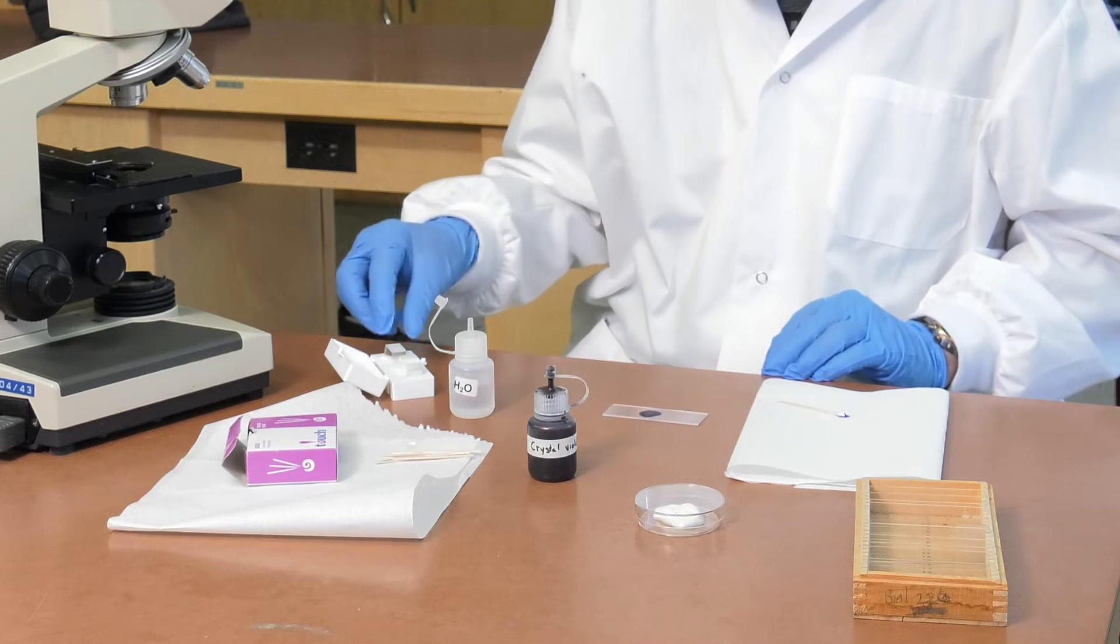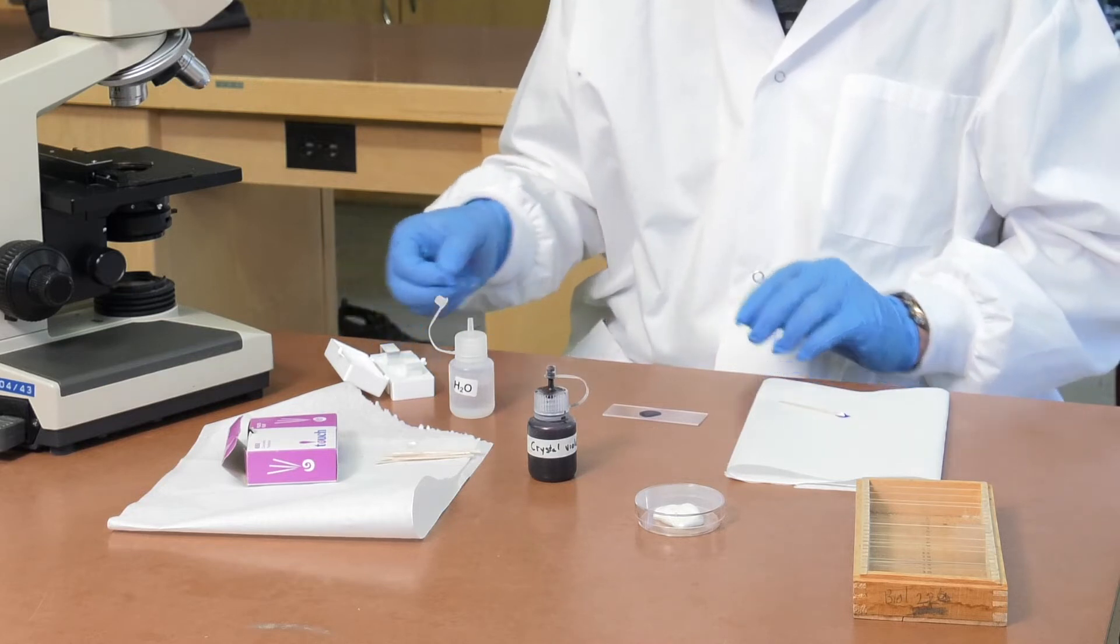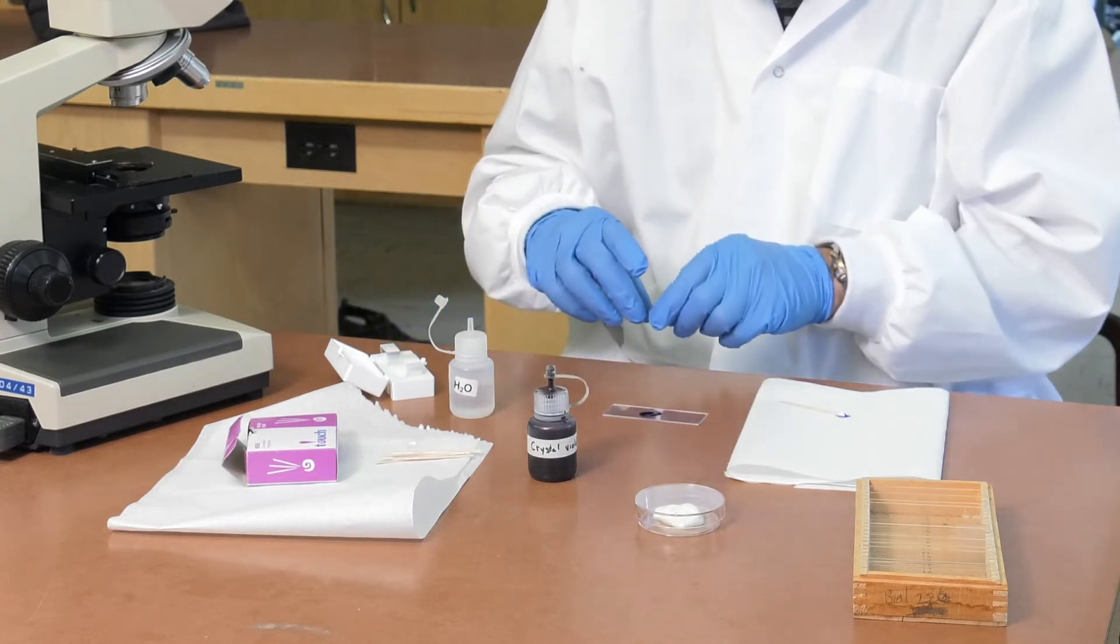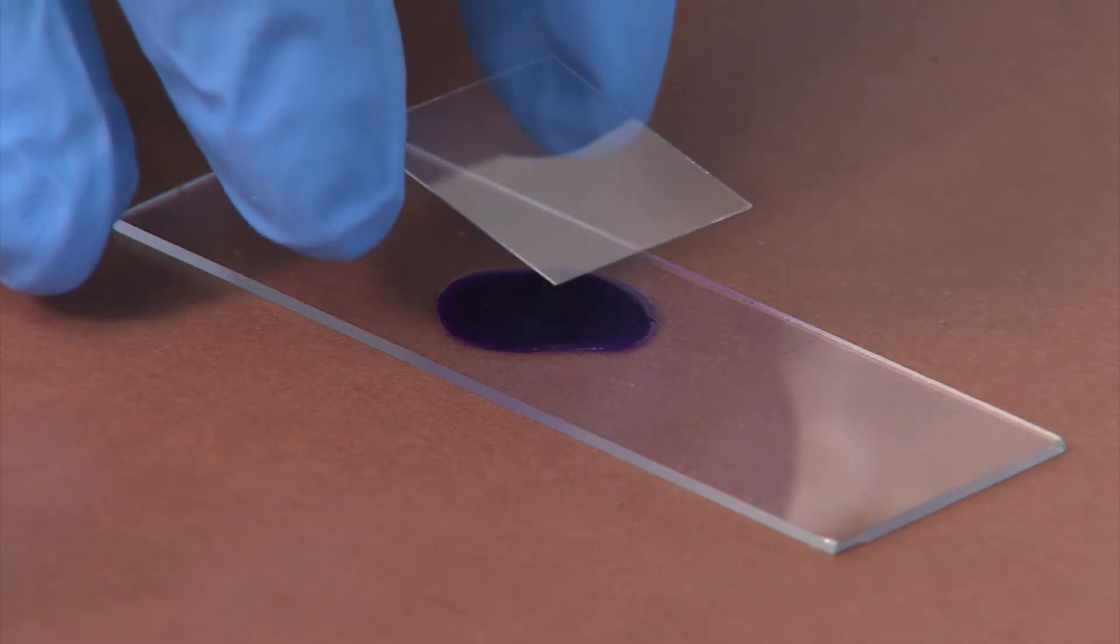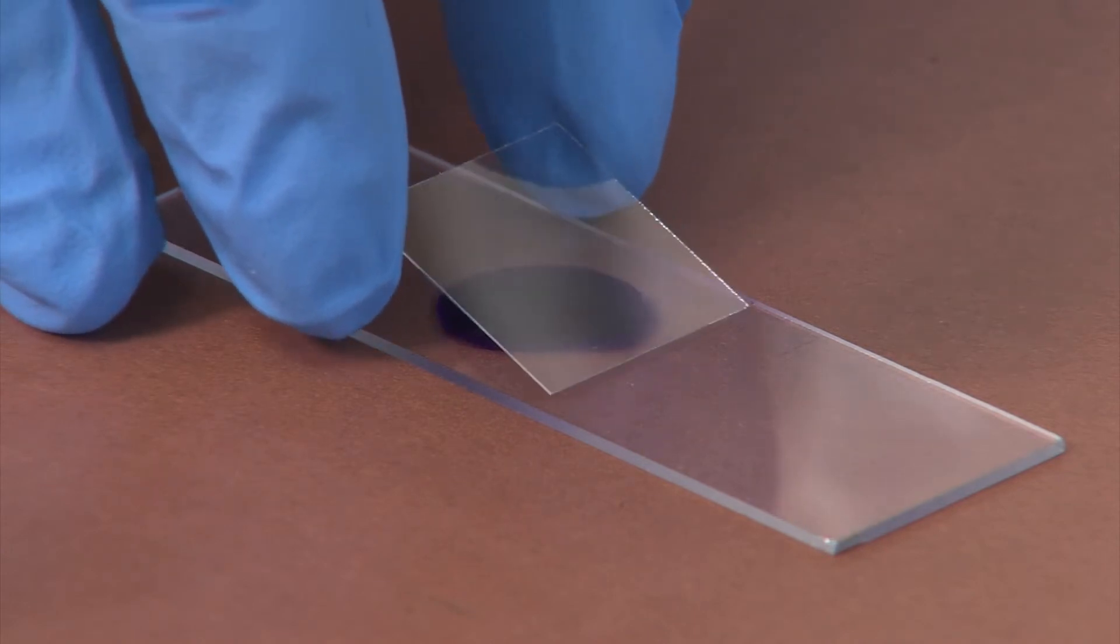Pick up a cover slip by the edges. Handle these carefully; they are made of thin glass and break easily. While holding the cover slip at 45 degrees, touch the bottom edge to the slide at the edge of the drop of stained yogurt.